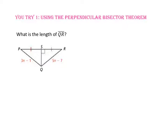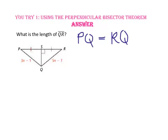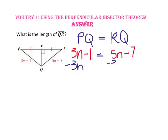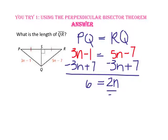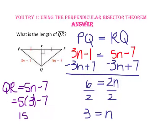Pause the video and do you try number 1. What is the length of segment QR? Segment QS is the perpendicular bisector of segment PR, so point Q is equidistant from points P and R. Substituting 3N minus 1 for segment PQ and 5N minus 7 for segment RQ, we subtract 3N from both sides and add 7 to both sides, giving 2N equals 6, then divide by 2, so N equals 3. Substituting N equals 3 into 5N minus 7: 5 times 3 is 15 minus 7, so the length of segment QR is 8.